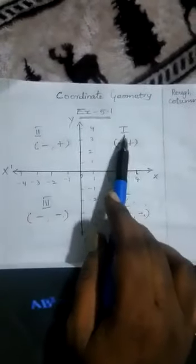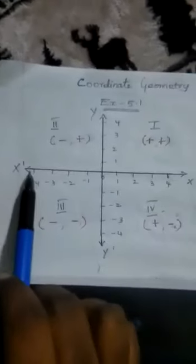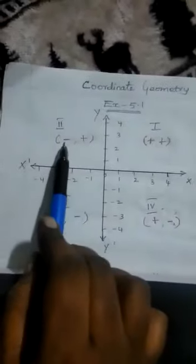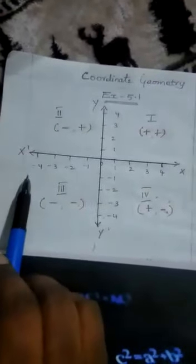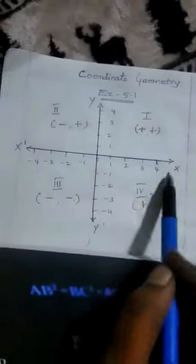In first quadrant, both are positive axes - x axis is positive, y axis is positive. In second quadrant, x axis is negative and y axis is positive. In third quadrant, x axis is negative and y axis is negative. In fourth quadrant, x axis is positive and y axis is negative.